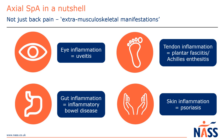Around a tenth of people with axial SpA develop psoriasis, a condition that causes raised plaques on the skin that can be itchy, flaky, scaly or red. The condition is not infectious, and some people can be unaware they have psoriasis if it affects an area such as the scalp or behind the ears. You can be referred to a dermatologist for personalised advice and further treatment.